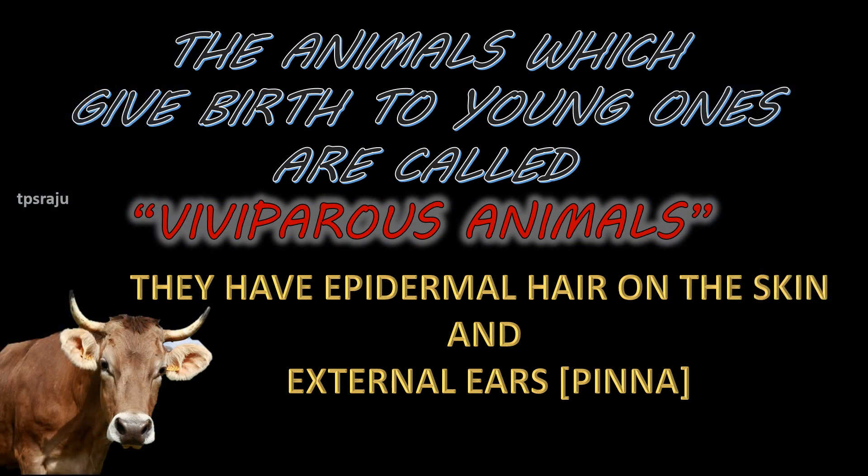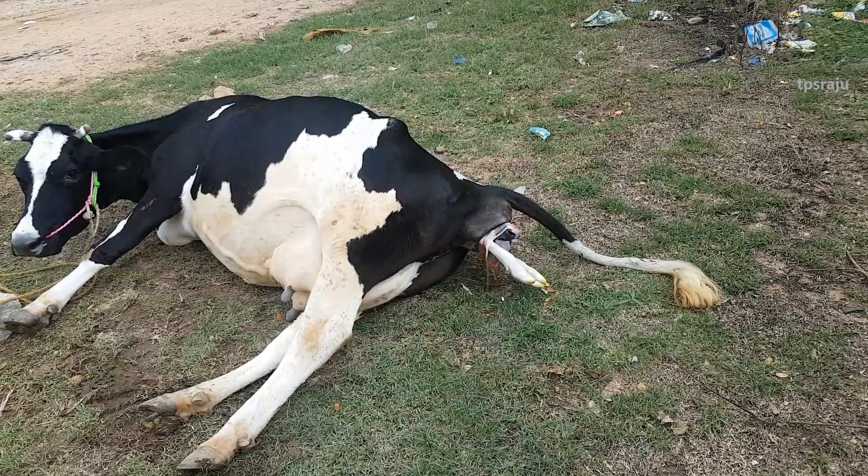The animals which give birth to young ones are called viviparous animals. We identify them easily. They have epidermal hair on the skin and external ears.